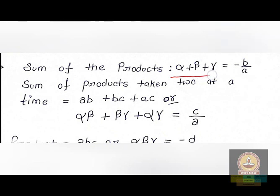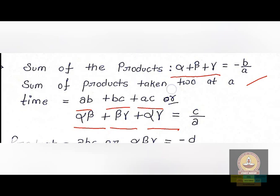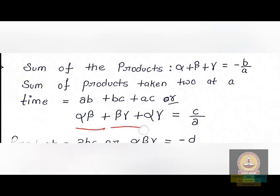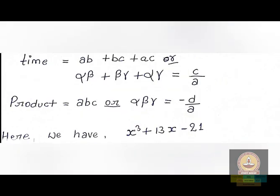As we all know, the sum of the roots — alpha plus beta plus gamma — equals minus b upon a for any equation. The sum of products taken two at a time — alpha·beta + beta·gamma + alpha·gamma — equals c upon a. And the product of roots alpha·beta·gamma equals minus d upon a. Note that a, b, c or alpha, beta, gamma can be used interchangeably as the root variables.